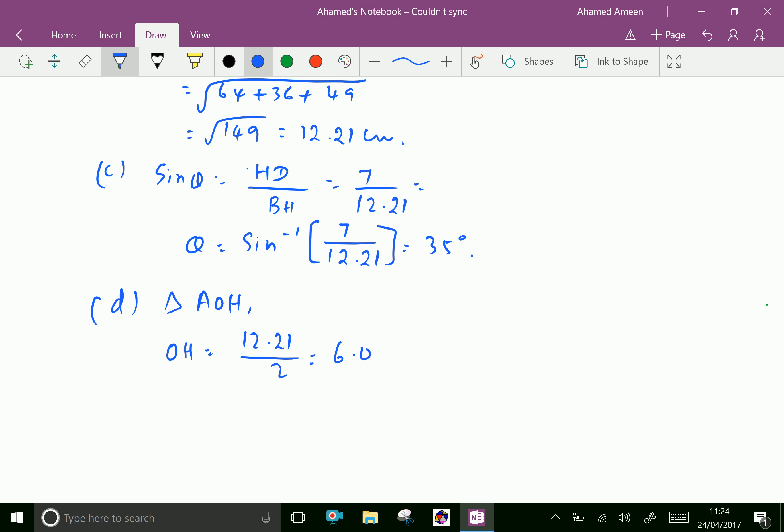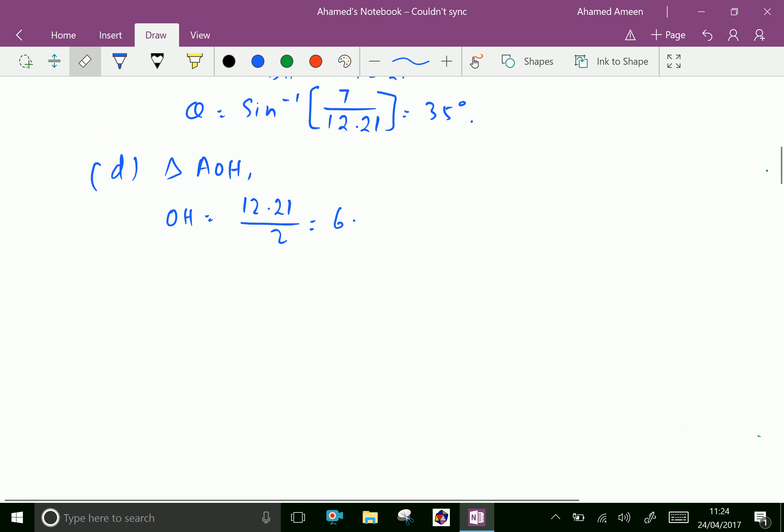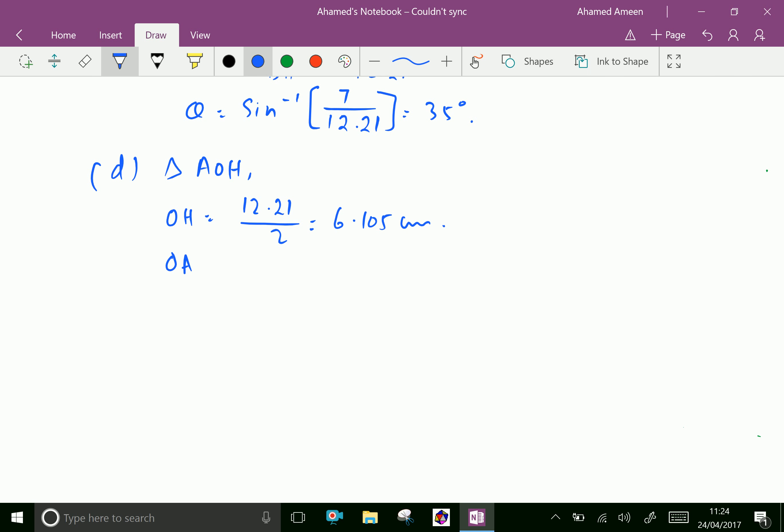Now OA equals 12.21 over 2, which gives 6.105 centimeters.